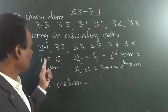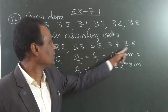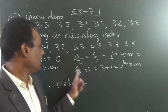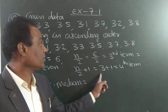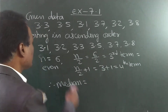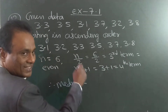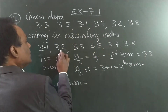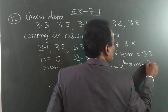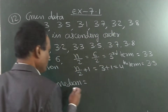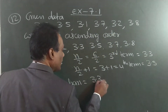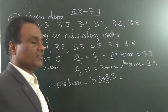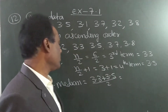Otherwise, use the rule I gave. How many terms? 6 numbers. n/2 = 6/2 = third term. n/2 + 1 = 3 + 1 = fourth term. What is the third term? Counting 1, 2, 3 — it is 3.3. The fourth term is 1, 2, 3, 4 — it is 3.5. So, median = 3.3 + 3.5, divided by 2.